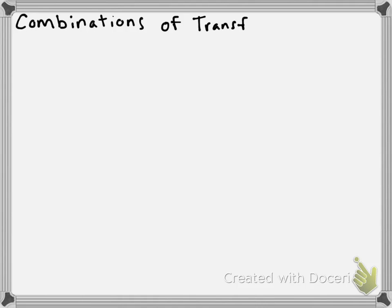Hey everyone, so in this video I want to talk about combinations of transformations. We've actually spent the last few days talking about different kinds of transformations of functions. We looked at first at translations of functions — vertical and horizontal translations. Then we moved on to reflections — vertical and horizontal reflections. And then we worked on vertical and horizontal stretches and compressions. So now that we've learned about them each individually, we're going to combine them into one giant concept. So let's take a look at it.